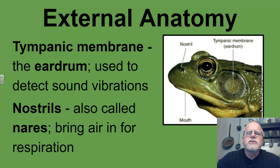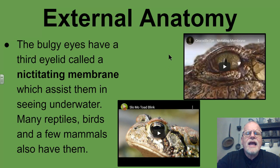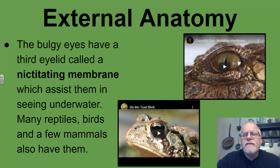Then we have the nostrils here, also known as the external nares, and this brings in air for respiration. If we take a look at the bulging eyes, they have a third eyelid called a nictitating membrane. Most amphibians have this, a lot of reptiles have it, a lot of birds, and even a few mammals have this. In fact, we even have the vestigial remnants of this — if you look in the corner of your eye, you'll see a little thin piece of tissue there.